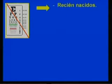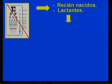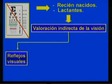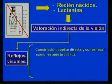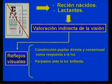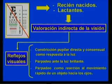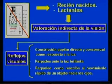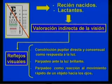La agudeza visual no es posible medirla en recién nacidos y lactantes. En ellos se realiza una valoración indirecta de la visión a través de los reflejos visuales: constricción pupilar directa y consensual como respuesta a la luz, parpadeo ante la luz brillante, y parpadeo como reacción al movimiento rápido de un objeto hacia los ojos. Debes confeccionar una tabla donde relaciones la edad del lactante con los avances visuales.